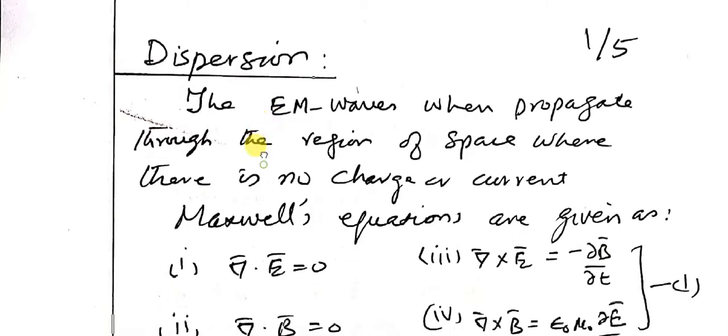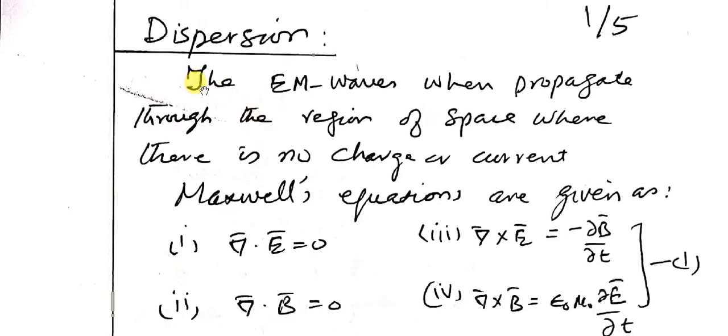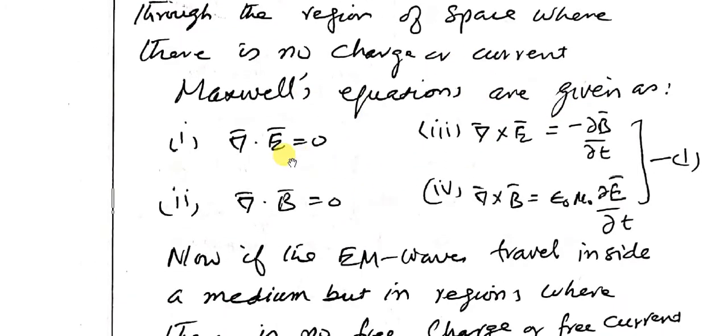To start with dispersion, electromagnetic waves when propagate through the region of space where there is no charge or current, Maxwell equations are given as: divergence of E equals zero, curl of E equals minus delta B by delta t, divergence of B equals zero, and curl of B equals epsilon naught mu naught delta E by delta t.